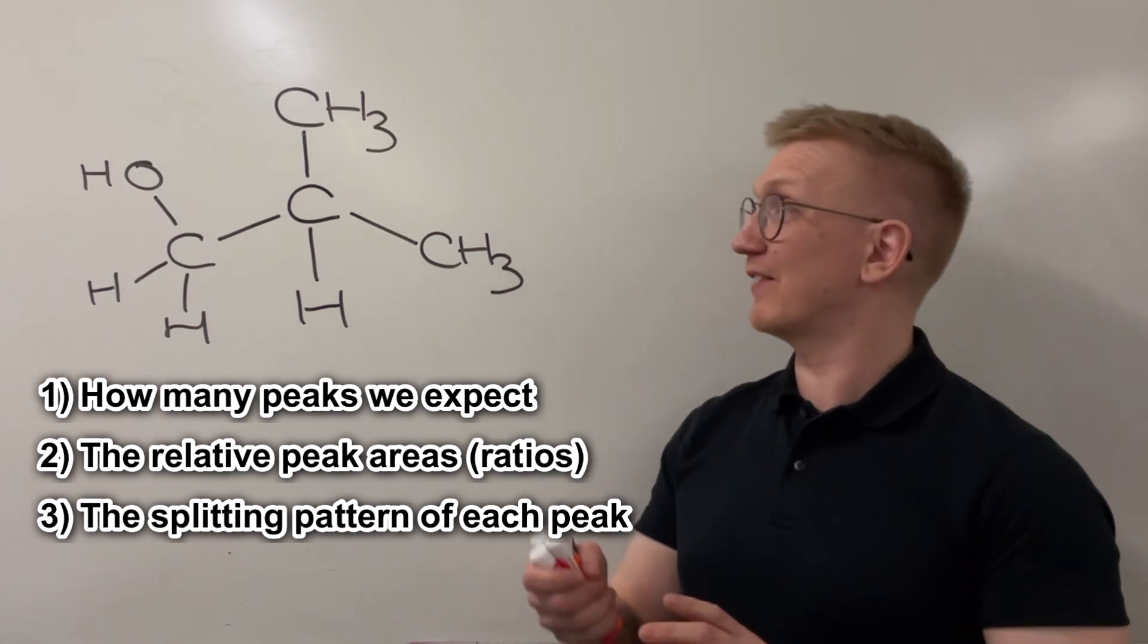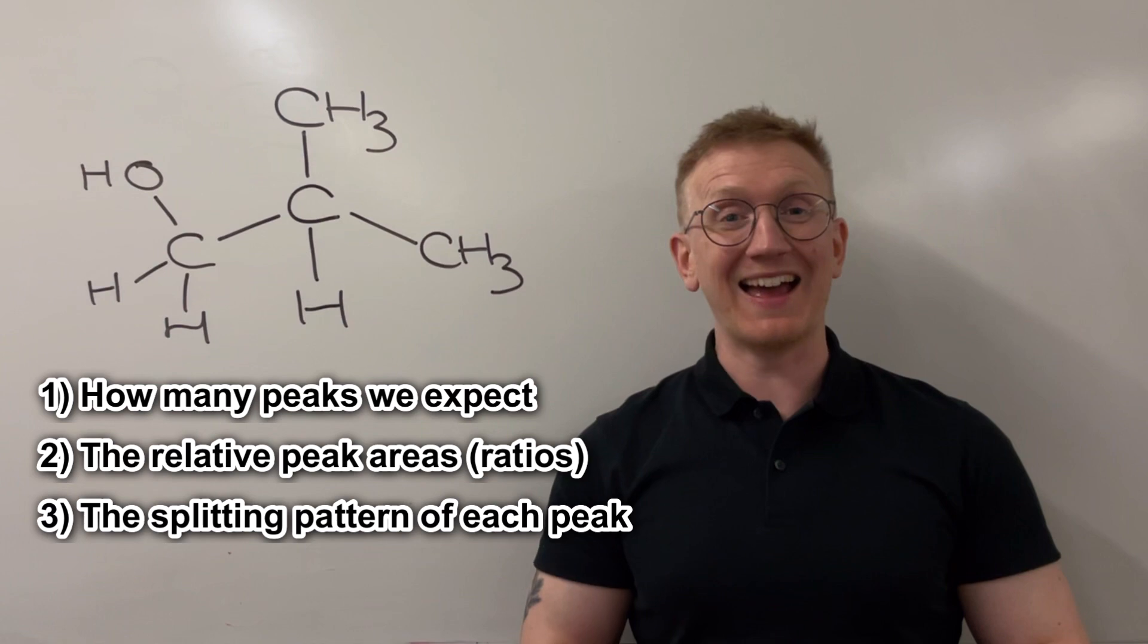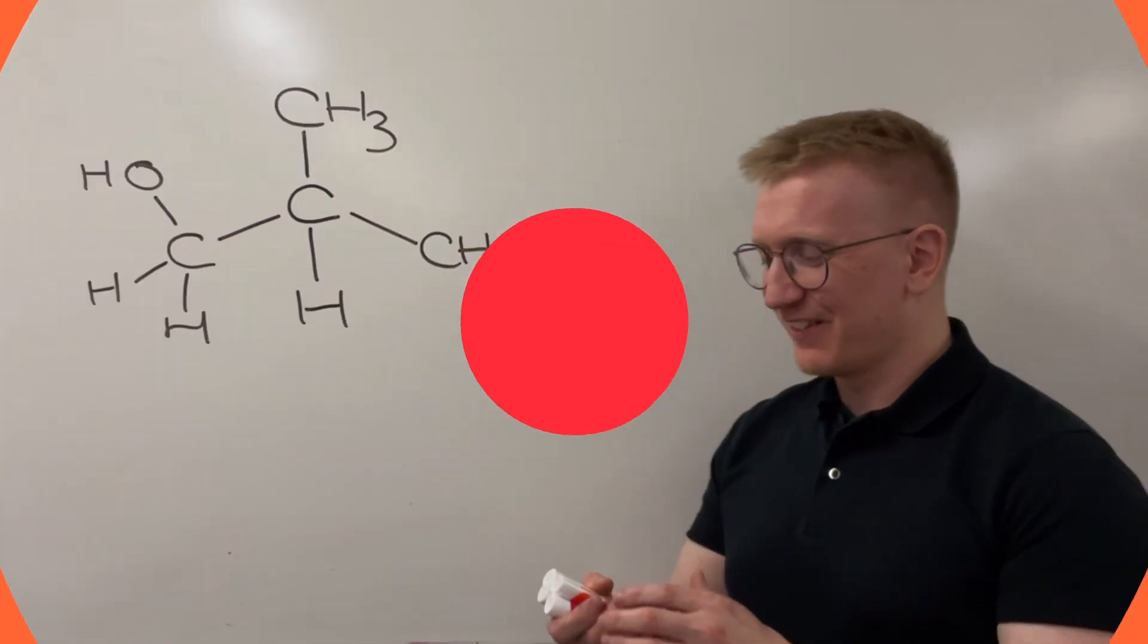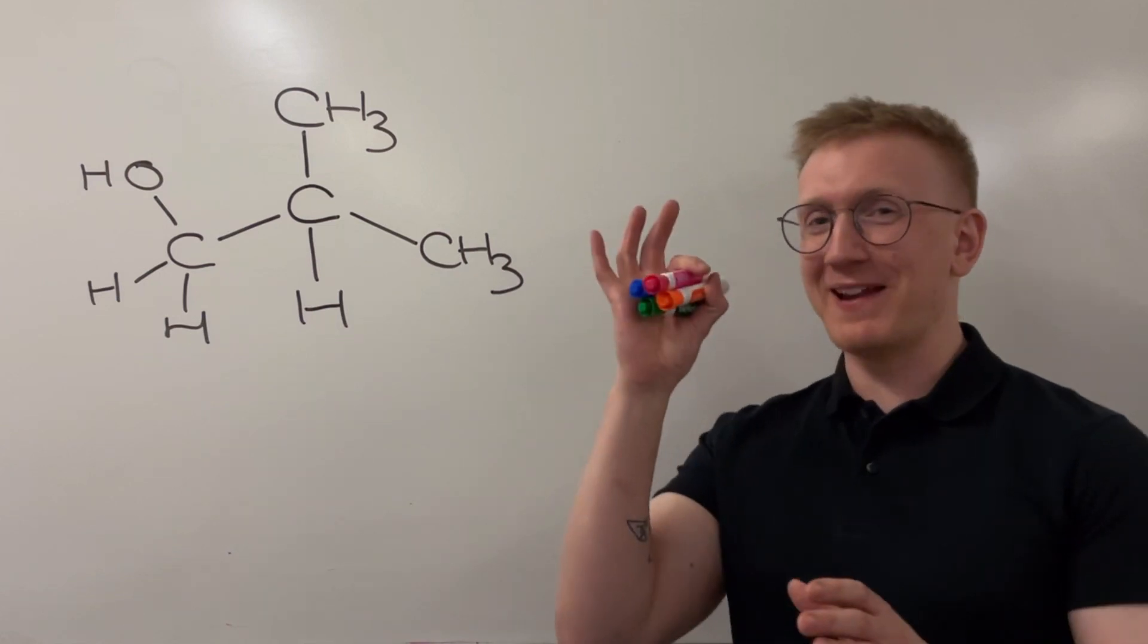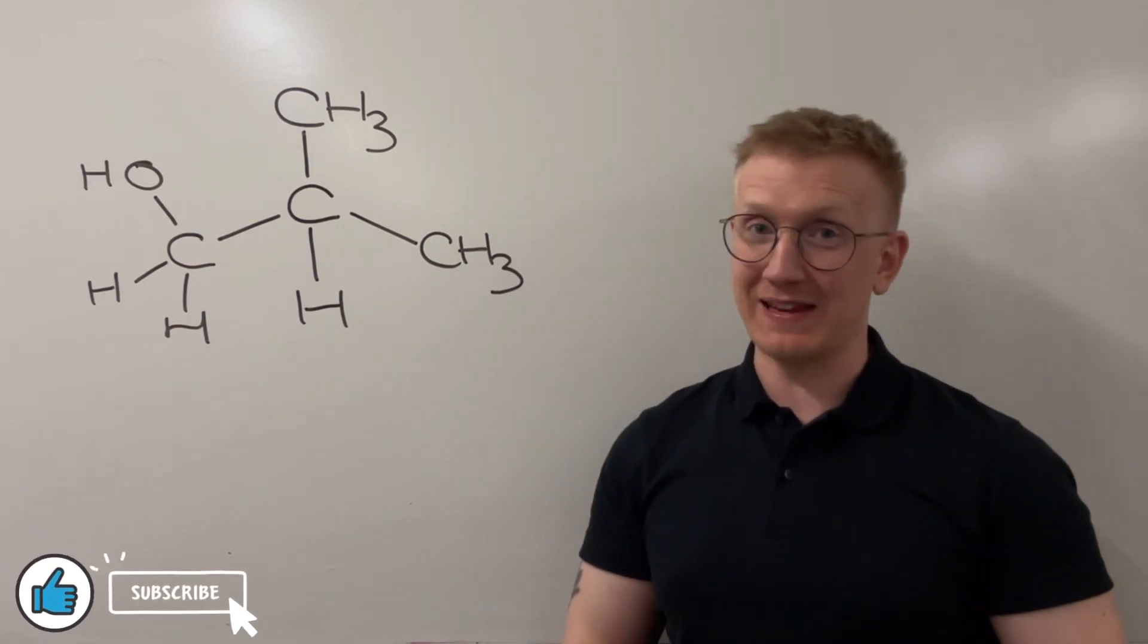So let's take a look at this 2-methyl-propan-1-ol and see what we would expect to get in its hydrogen NMR spectrum. All right, so for this molecule, again four pens might be a bit of a giveaway, but we would expect to see four different peaks.